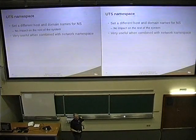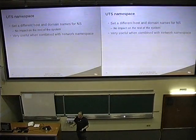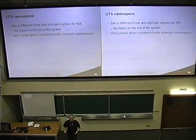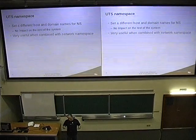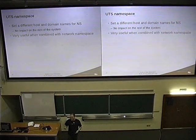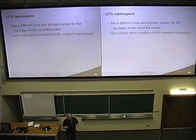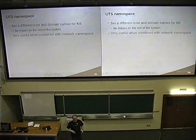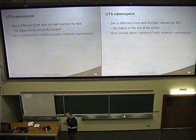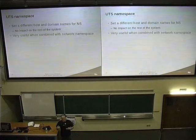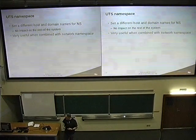UTS namespace goes with the network namespace — it lets you set up a different hostname for a process. If you're going to run SSH daemon inside a container, you need the SSH daemon to look up its hostname as part of its protocol to talk to the other end. So you probably want the hostnames inside your container to match the IP addresses they're being handed.